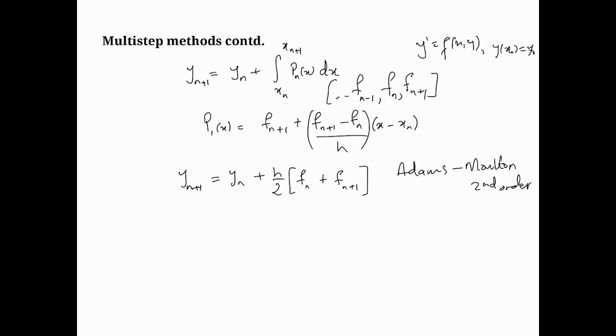Now, this is called an implicit method for one reason. Before we come to the name, let's look at what issue we face here. The problem is this fn plus 1. We don't have it, essentially. To get fn plus 1, we need yn plus 1. That's what we're trying to calculate here. So how are we supposed to put that in when we don't even have it?